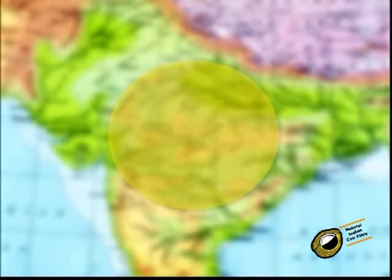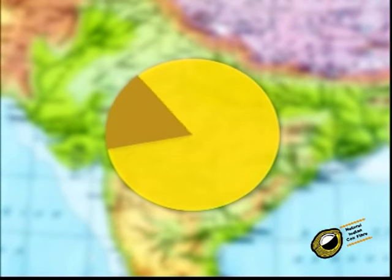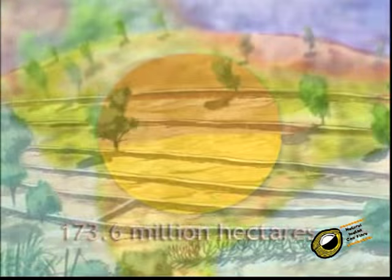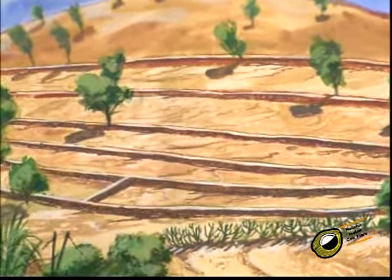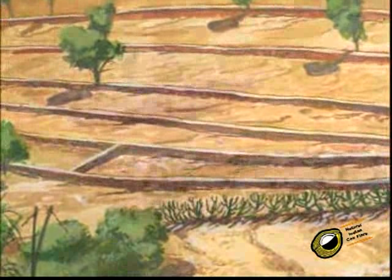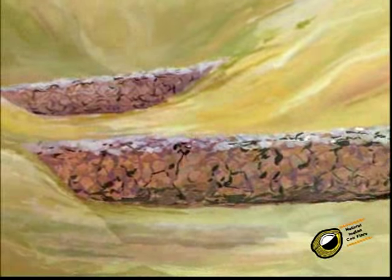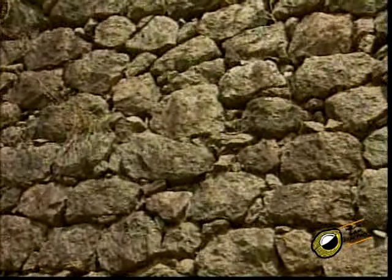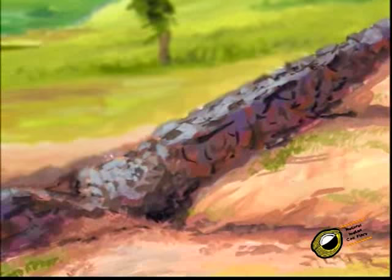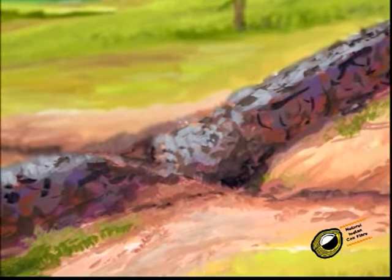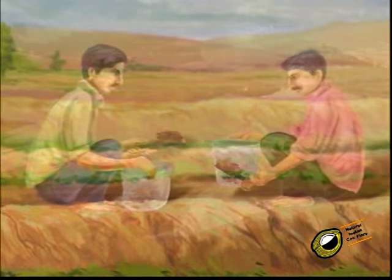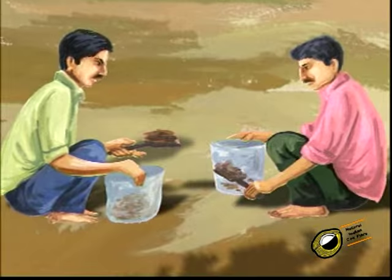The soil degradation figures in India are truly alarming. Nearly 53 percent of land area in India is subject to various types of land degradation. Traditionally, soil erosion has been controlled by employing various methods: contour bunds, check dams, stone pitching on slopes. However, these methods have serious limitations — they are labor intensive, failure prone, expensive and environmentally unfriendly. Besides, they reduce the area available for cultivation.